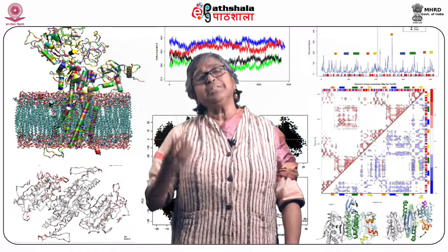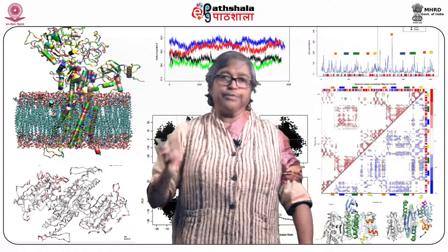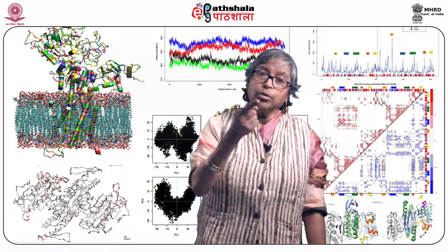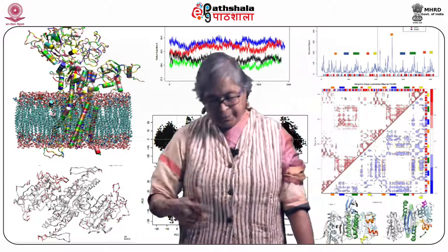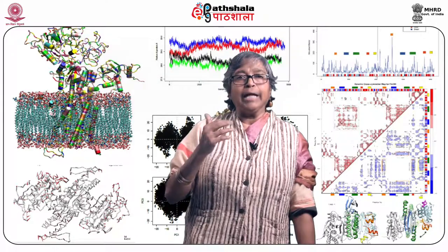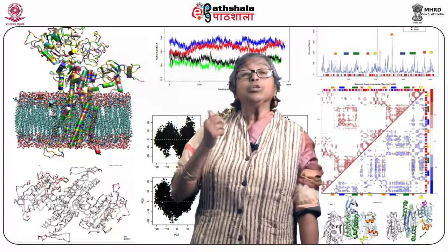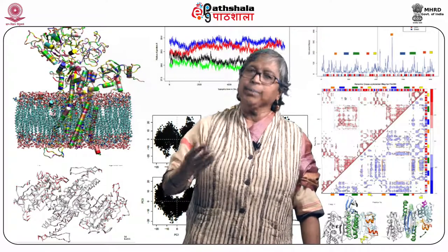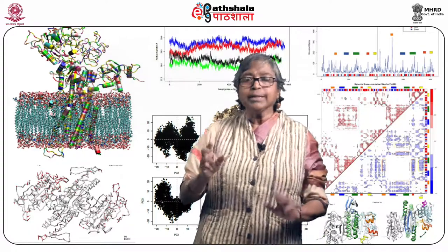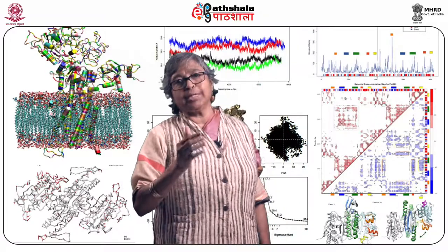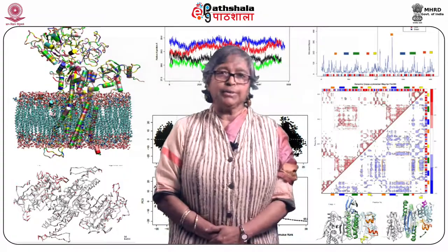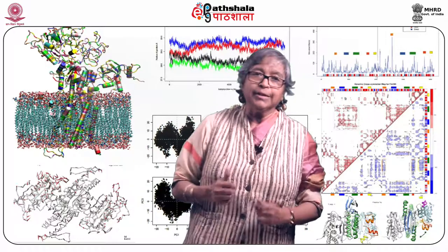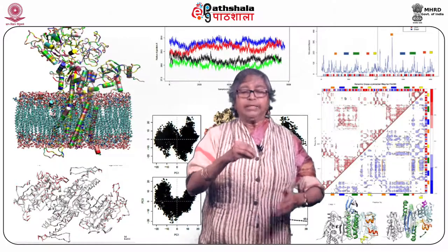The conjugate gradient method achieves convergence relatively inexpensively because it calculates both first and second gradients, though the double gradient is CPU-intensive. The direction is fixed — it always follows the least path, so it achieves convergence faster. The disadvantage is that for noisy functions, like the simplex method, it becomes very slow and gets stuck in local minima.